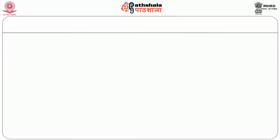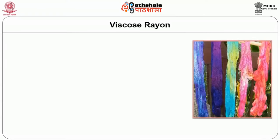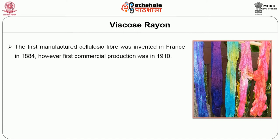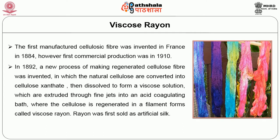Let us first deliberate on the first manufactured cellulosic fiber, which is Viscose Rayon. Viscose Rayon was the first manufactured cellulosic fiber, invented in France in 1884; however, first commercial production was in 1910. In 1892, a new process of making regenerated cellulose fiber was invented, in which the natural cellulose is converted into cellulose xanthate, then dissolved to form a viscous solution, which is extruded through fine jets into an acid coagulation bath, where the cellulose is regenerated in filament form called Viscose Rayon.